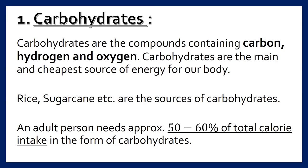Now let us learn about all these macronutrients one by one in detail. The first macronutrient is carbohydrates. Carbohydrates are compounds containing carbon, hydrogen, and oxygen. They are the main and cheapest source of energy for our body. Rice, sugarcane, etc. are sources of carbohydrates. An adult person needs approximately 50 to 60% of total caloric intake in the form of carbohydrates.